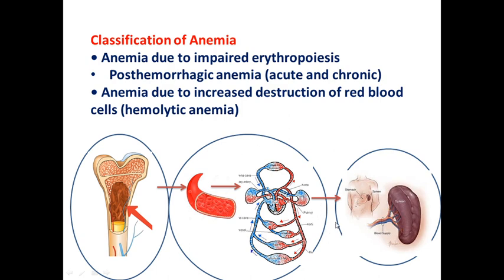When we have over-destruction of erythrocytes, this may occur due to hereditary or acquired disorders. Hereditary disorders include hereditary microspherocytosis, when our erythrocytes' shape is not biconcave but becomes spherical. These spherical cells cannot pass through small capillaries, are quickly destroyed, and produce high bilirubin causing hemolytic jaundice.